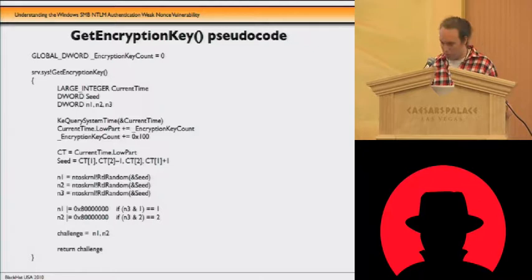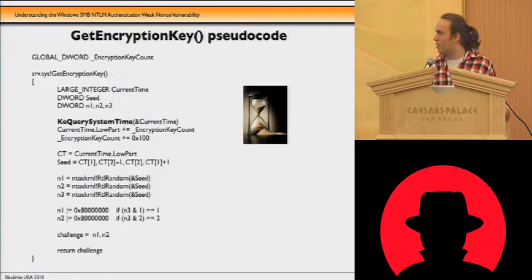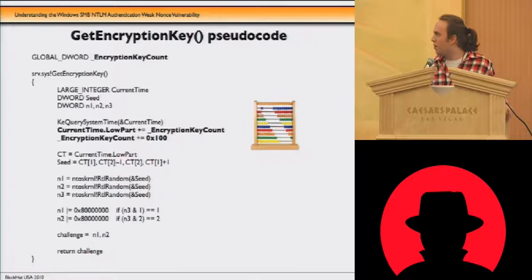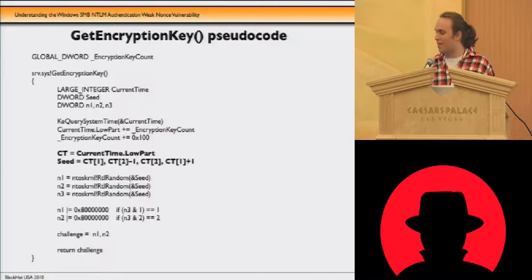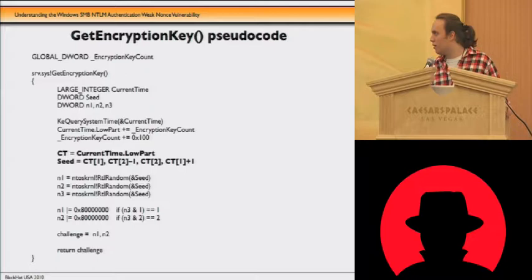The first thing we see is how it calls the querySystemTime function. With the low part of the return value — the current time — we add a counter and update that counter. We'll create a seed using that formula, only using the low part of the current time and only the middle 16 bits.